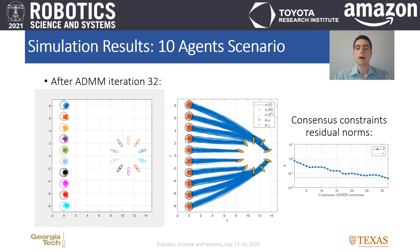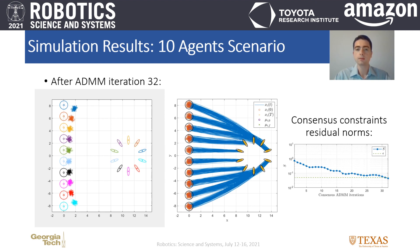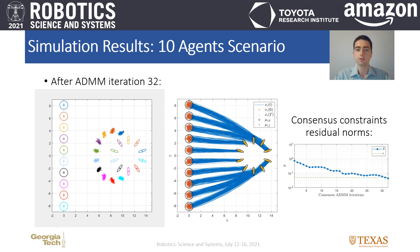As shown, the agents successfully reached the desired formation, their distributions are steered within the prescribed limits, and they successfully avoid any collisions.